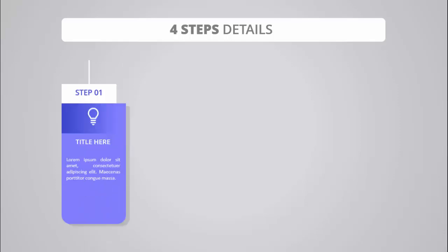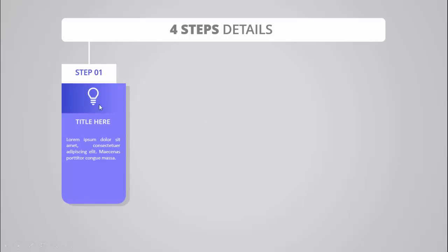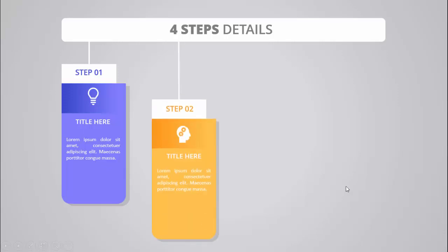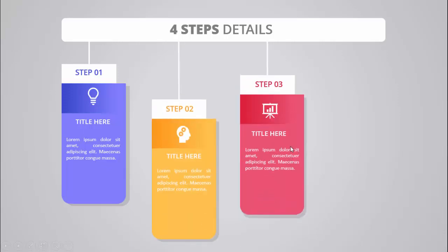In today's tutorial I'm going to show you how to create a four-step infographic slide in PowerPoint. When I click it will show you step one, where you can add the icons, the title, and the detailed text. When I click again with a different color combination, it shows step two.